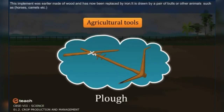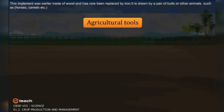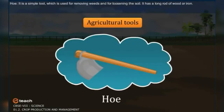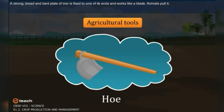The plough has been used since ancient times for tilling the soil, adding fertilizers to the crop, removing the weeds, and scraping of soil. This implement, earlier made of wood, has now been replaced by iron. It is drawn by a pair of bulls or other animals such as horses and camels. The hoe is a simple tool used for removing weeds and for loosening the soil. It has a long rod of wood or iron with a strong, broad and bent plate of iron fixed to one end, working like a blade. Animals pull it.